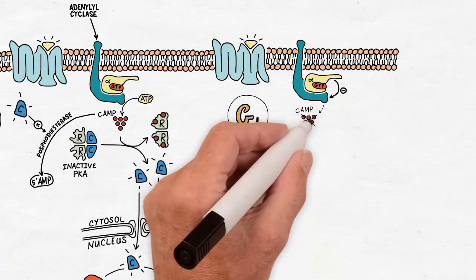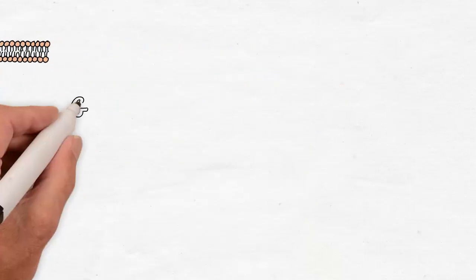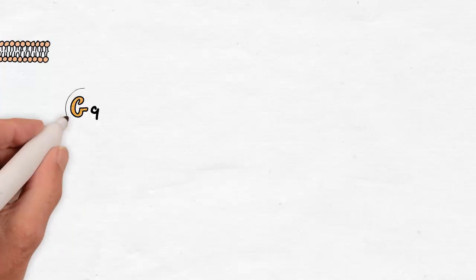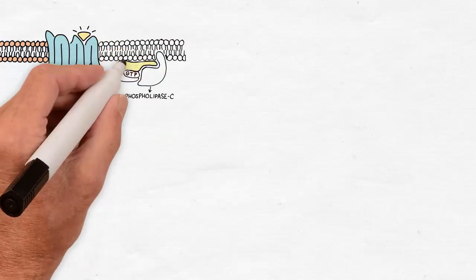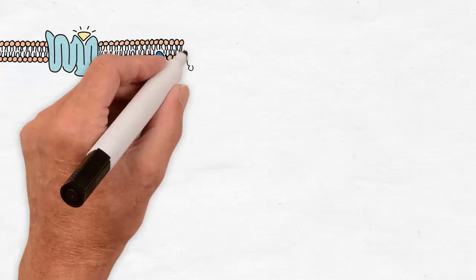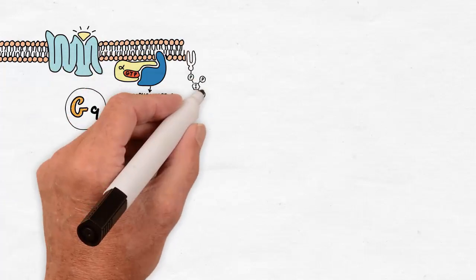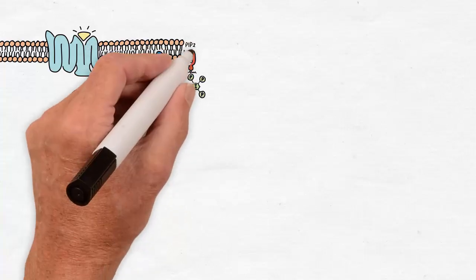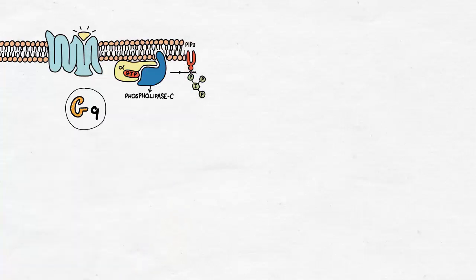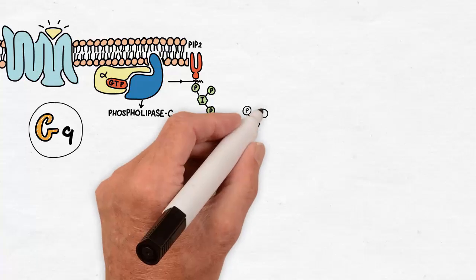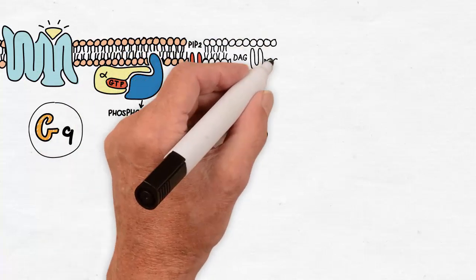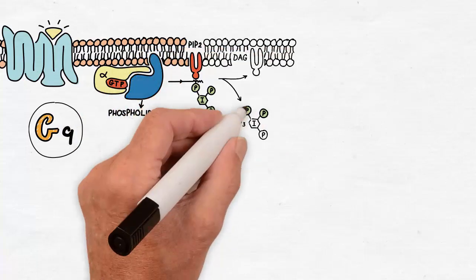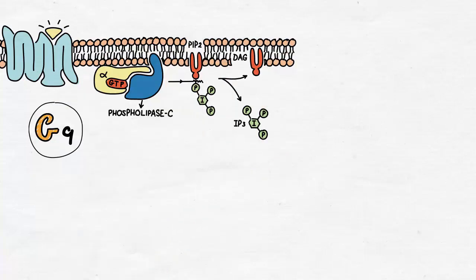While if the activated alpha subunit is of the Q type, it stimulates phospholipase C to cleave the membrane lipid phosphatidylinositol biphosphate or the PIP2 into inositol triphosphate or IP3 and diacylglycerol or DAG, which remains in the plasma membrane.